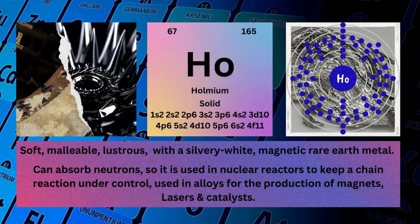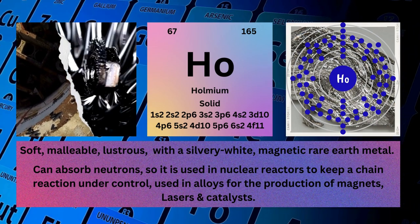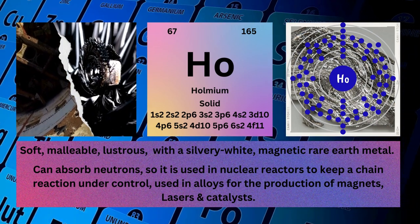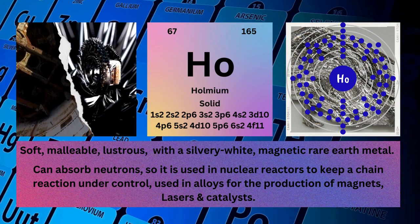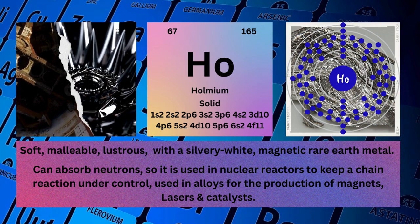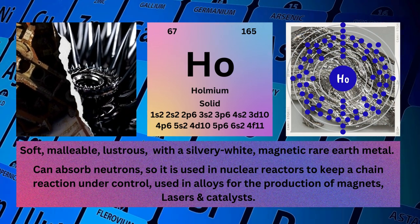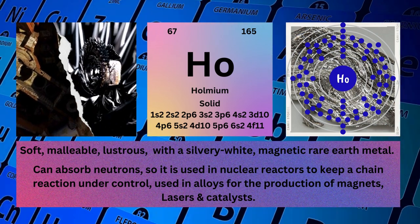Holmium. Atomic number: 67. Mass number: 165. Symbol: Ho. State: Solid.